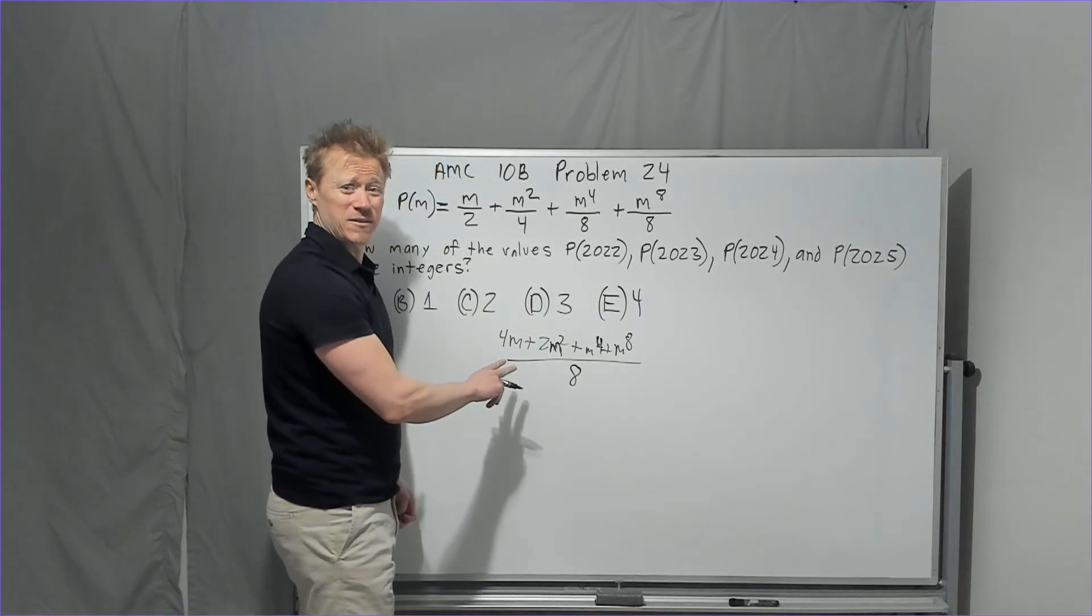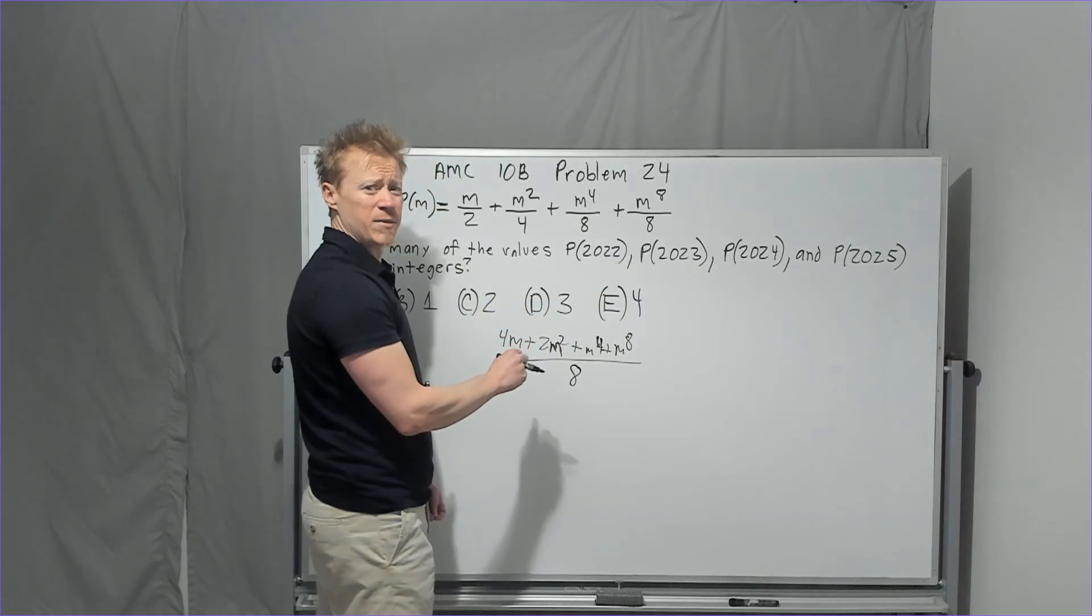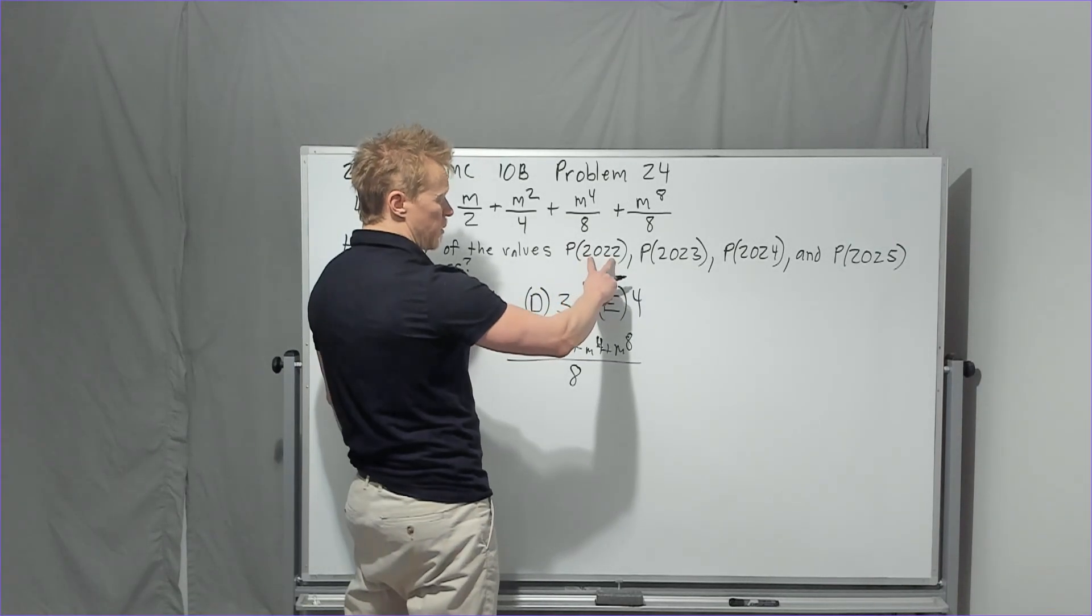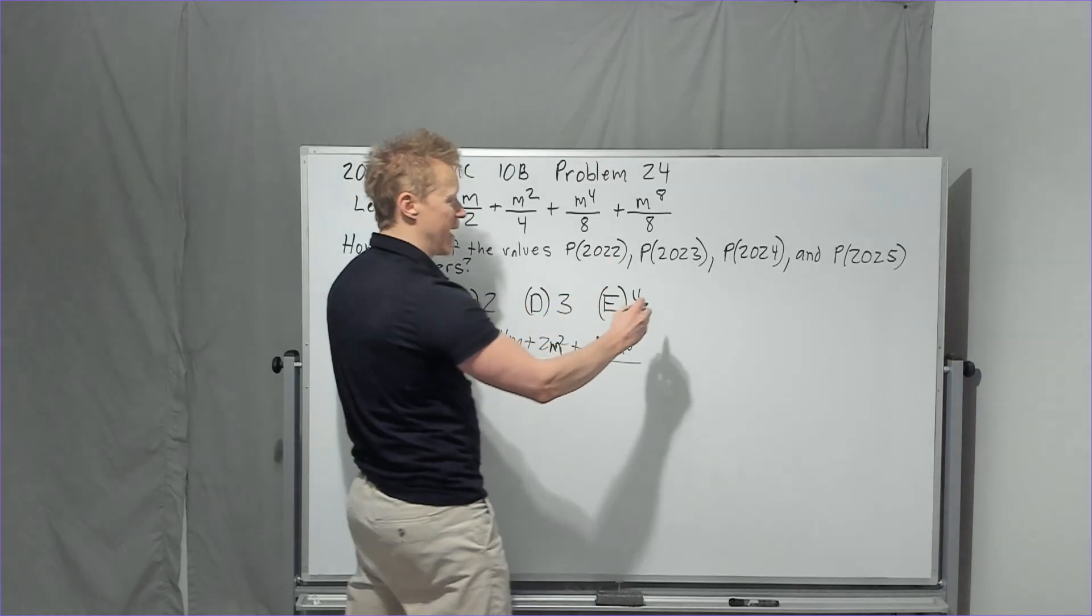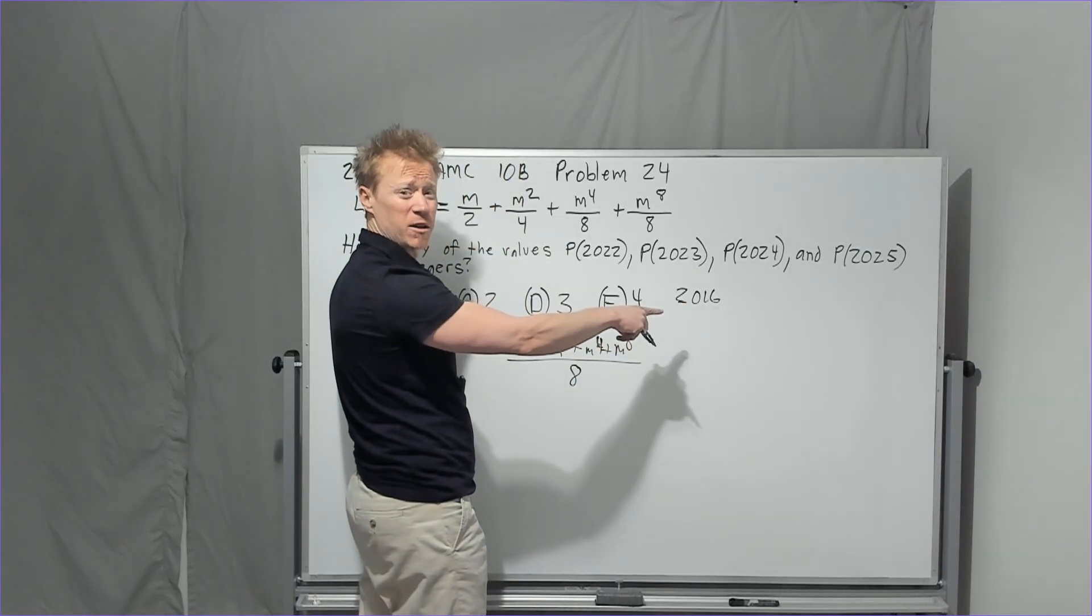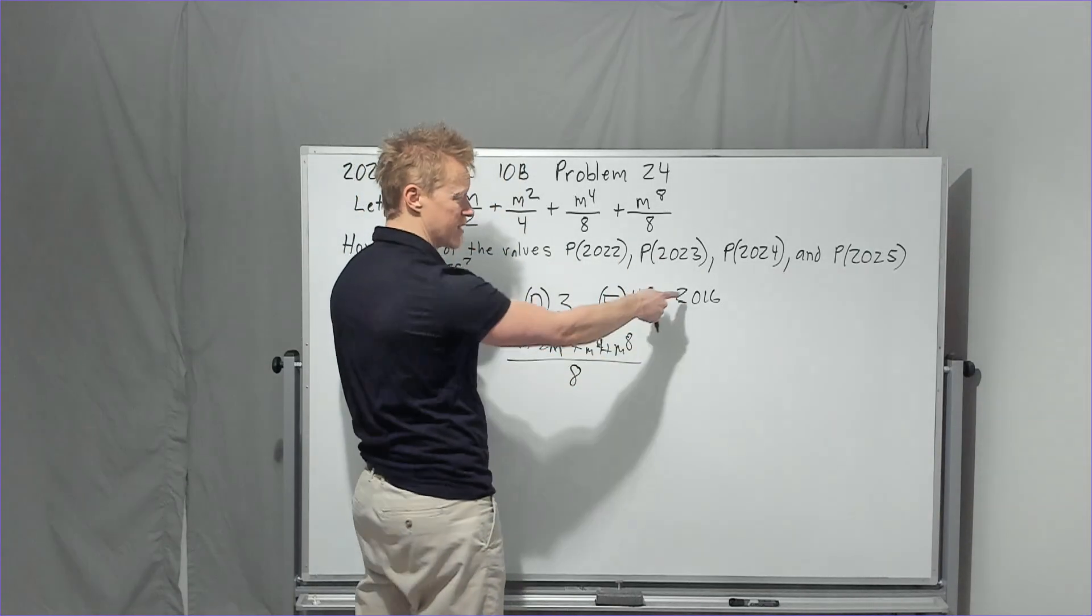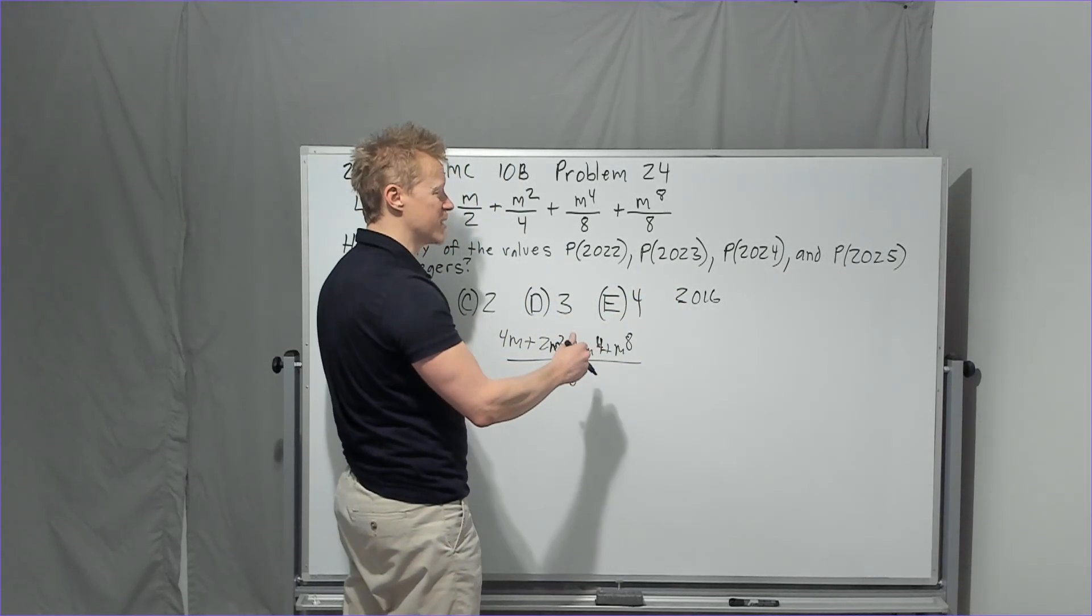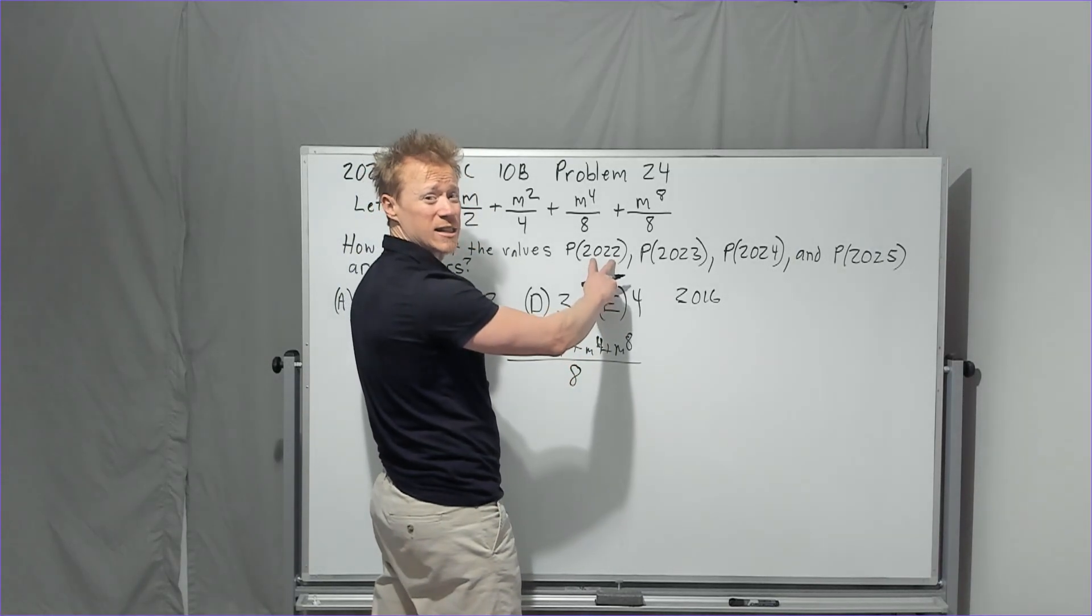So how do I do that? Well, you don't want to plug this in. Good Lord, that would be terrible. Instead, you're going to want to find what is this equal to when it's divided by eight. You probably know that 2016 is a multiple of eight. Every thousand is, and 16 is, so the 2000 plus 16 would be that way. That means the remainder is six.